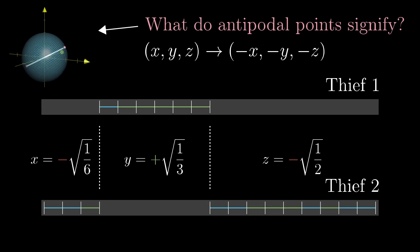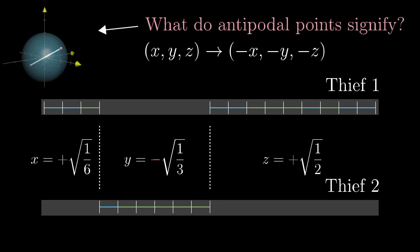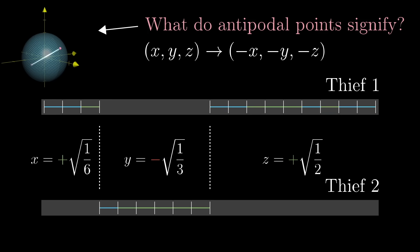Well, the squares of these three coordinates are the same, so each one corresponds to making the same cuts on the necklace. The difference is that every piece switches which thief it belongs to. So jumping to an antipodal point on the opposite side of the sphere corresponds with exchanging the pieces.